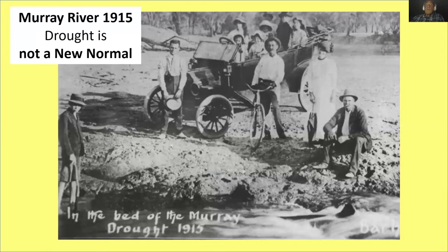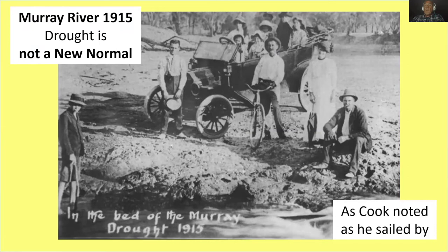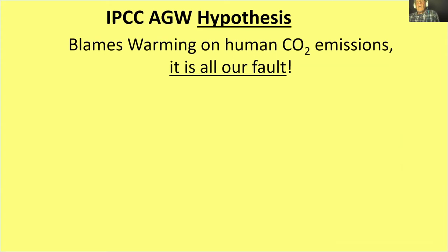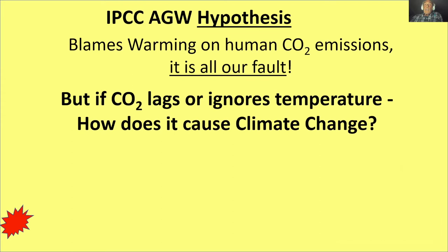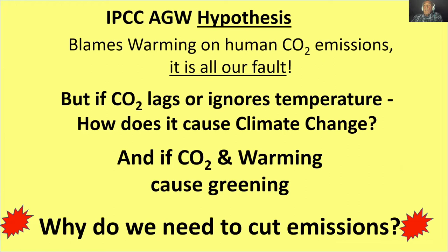Drought is not a new normal. Drought and fires have happened many times before, they're not getting any worse, and I don't believe they're caused by increased human CO2. The IPCC Anthropogenic Global Warming hypothesis blames all warming on human CO2 emissions, which is why they want us to cut emissions. But if CO2 lags or ignores temperature, how does it cause climate change?